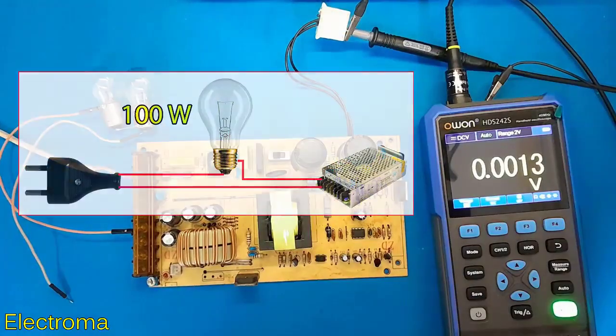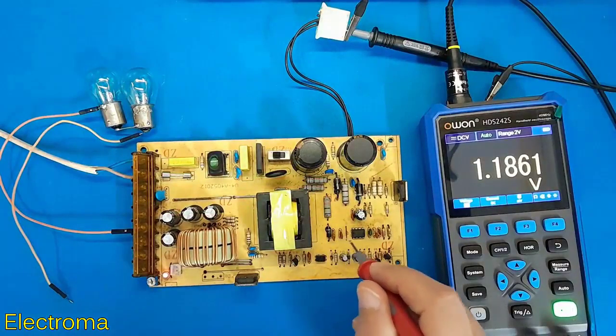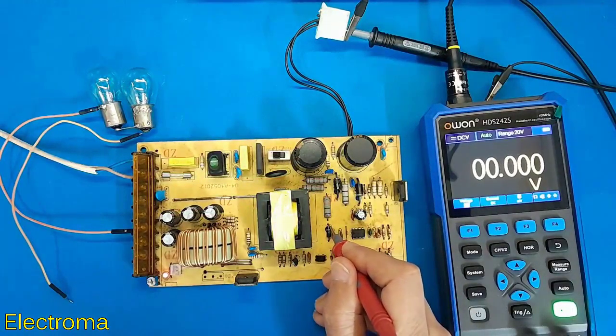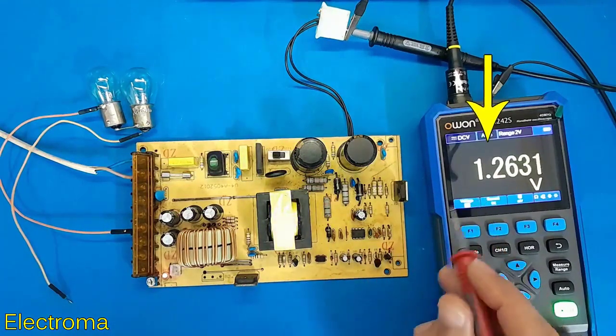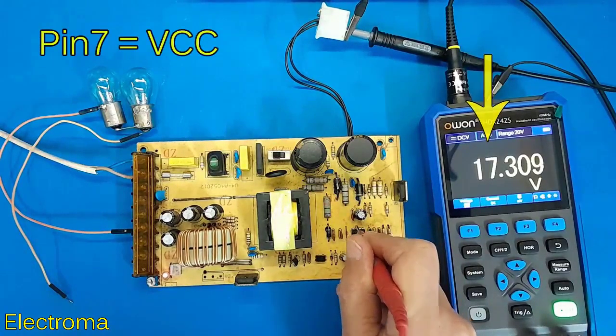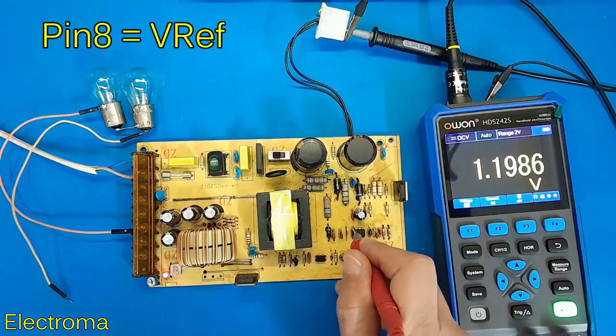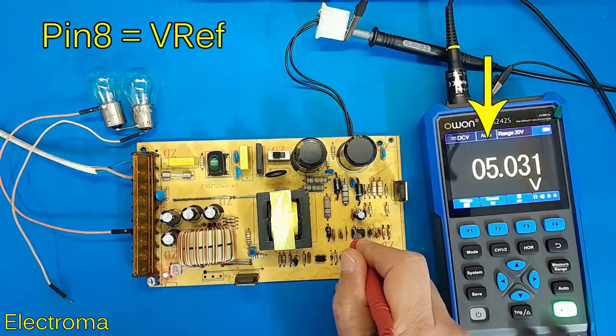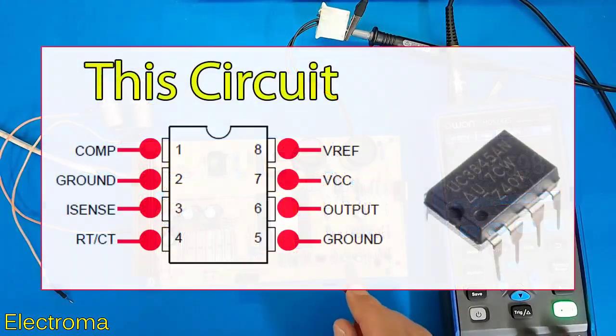First measure the voltage of pin 7 or on the power diode, around 17 volts. Now pin 7 around 17. Pin 8 is the reference voltage, around 5 volts. Remember that in this circuit pin number 2 which is the voltage feedback is connected to ground.